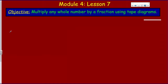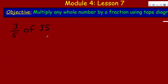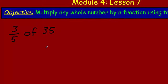Let's start with problem one and look at three fifths. We have three fifths of 35. We've used two different models before — remember the counters and arrays. What we're trying to find out is: what is three fifths of 35? We know the whole is 35, so we need to get ourselves a tape diagram.